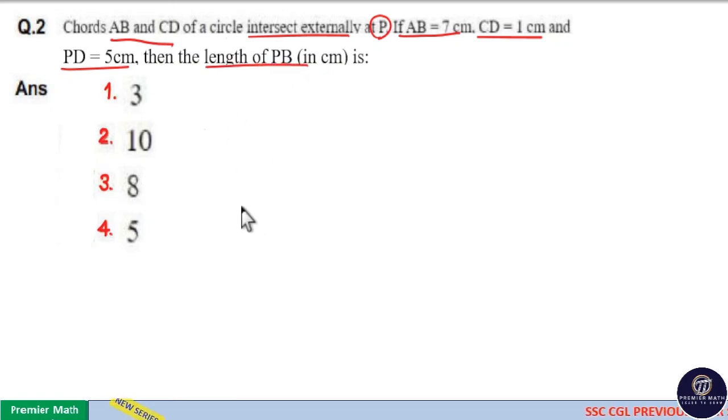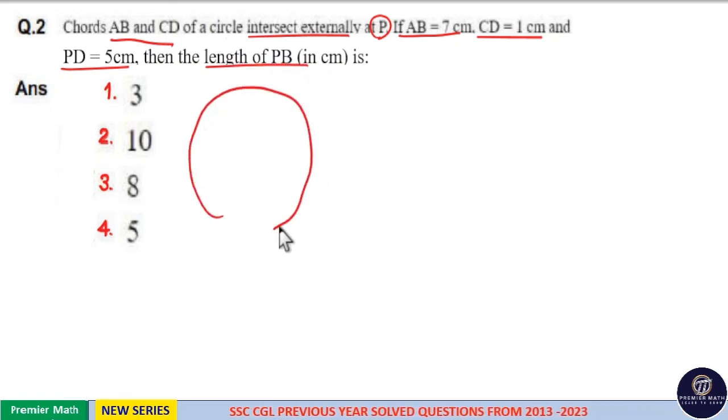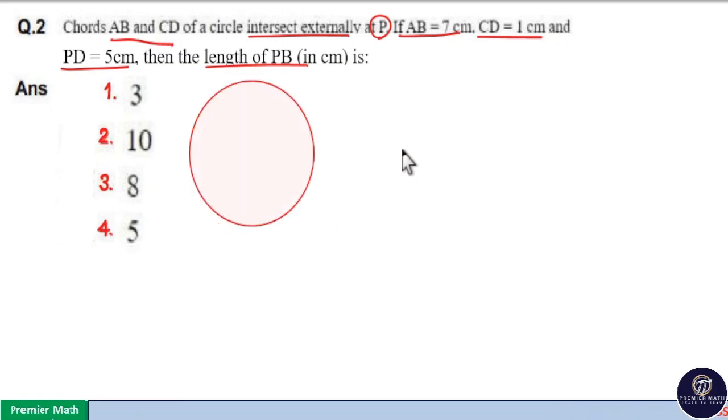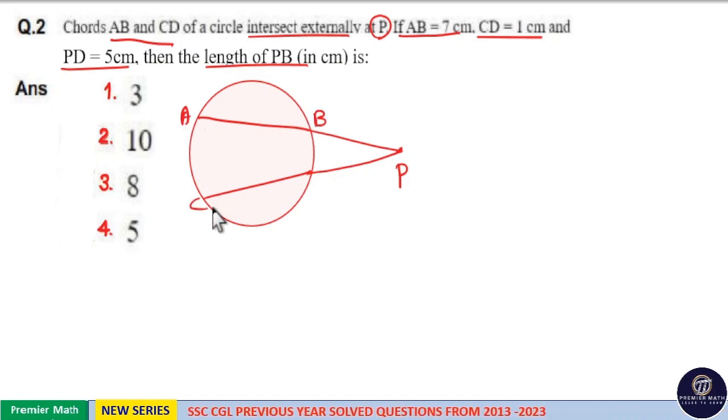Here, consider two chords of a circle that intersect externally at point B. This is point B, and here are the two chords. These two chords intersect externally at point B. Now, this is chord AB and this is chord CD.